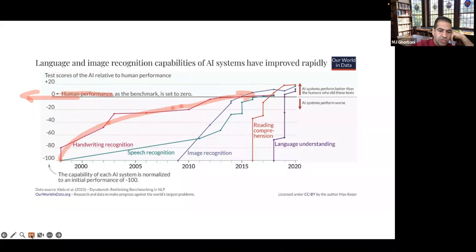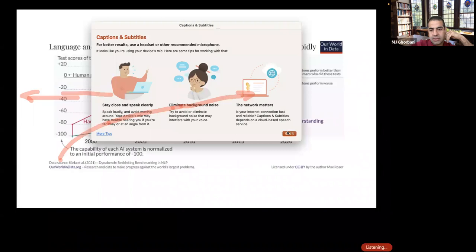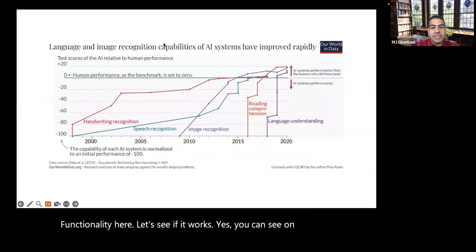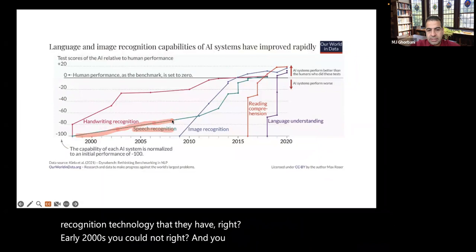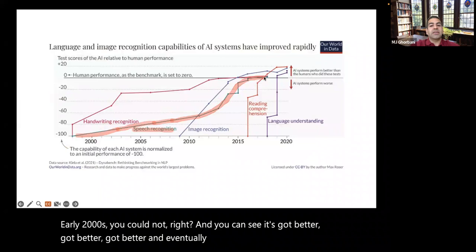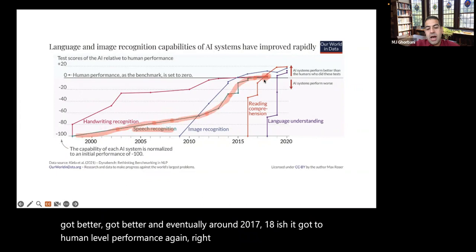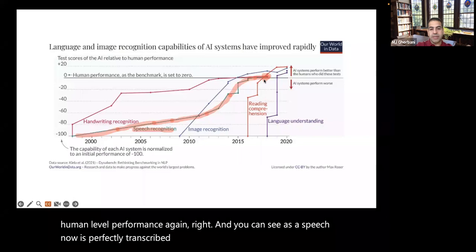Then consider speech recognition — early 2000s, you could not do that. It got better and better, and eventually around 2017-2018 it reached human-level performance. Right now, as I speak, this PowerPoint speech recognition is transcribing my speech perfectly — voice to text. I experimented with this technology three or four years ago and it wasn't as good, but today it can understand any accent and even understand languages like Japanese and Chinese and translate them too.